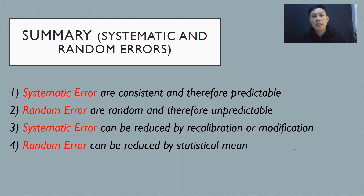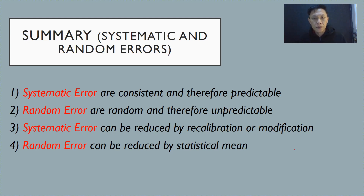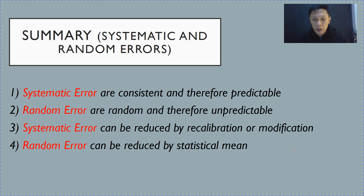To summarize: systematic errors are consistent and therefore predictable. In contrast, random errors are random and therefore unpredictable. Systematic error can be reduced by recalibration or modification of experimental technique. Random errors can be reduced by taking the average of repeated readings.